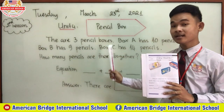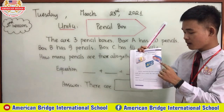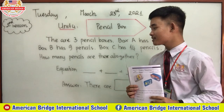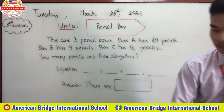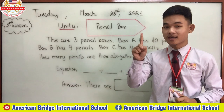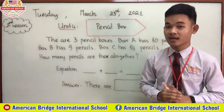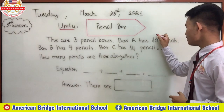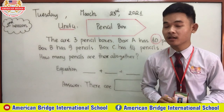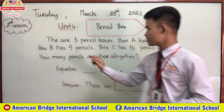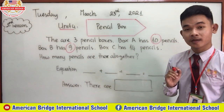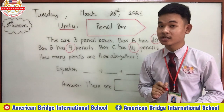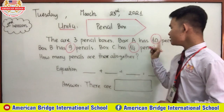Box B has 9 pencils, and box C has 14 pencils. How many pencils are there altogether? Now let's do it all together. Box A has 10 pencils, box B has 9 pencils, and box C has 14 pencils.